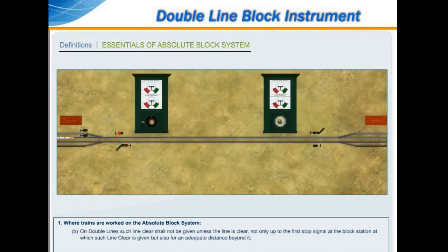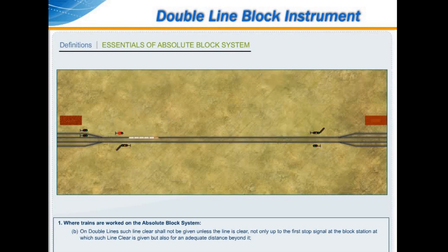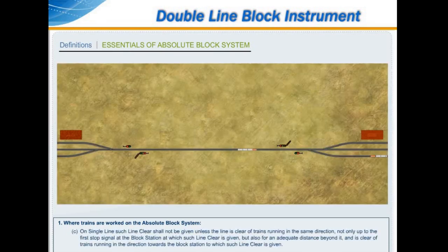On double lines, such line clear shall not be given unless the line is clear not only up to the first stop signal at the block station at which such line clear is given, but also clear of trains running in the direction towards the block station to which such line clear is given.